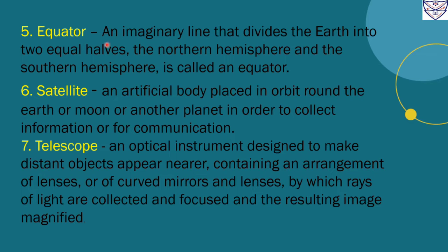Number 5. Equator. An imaginary line that divides the earth into two equal halves, the northern hemisphere and the southern hemisphere, is called an equator.